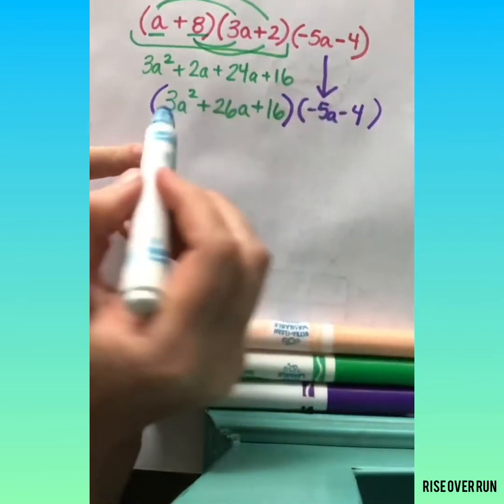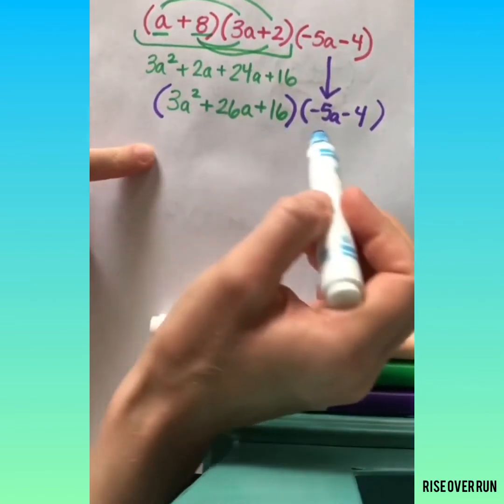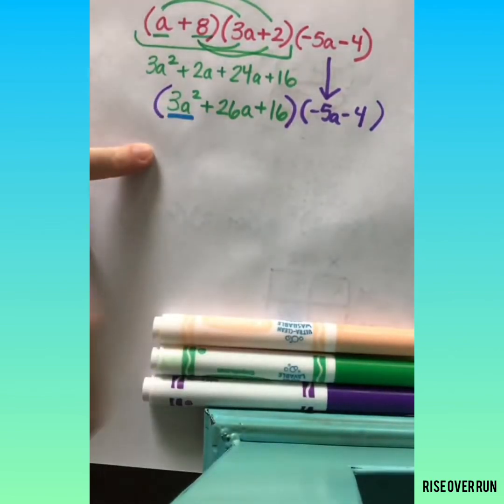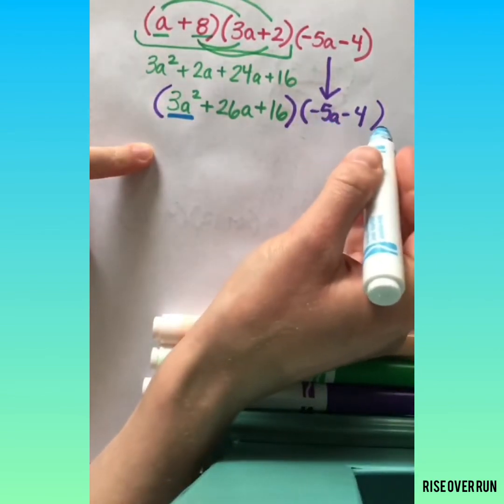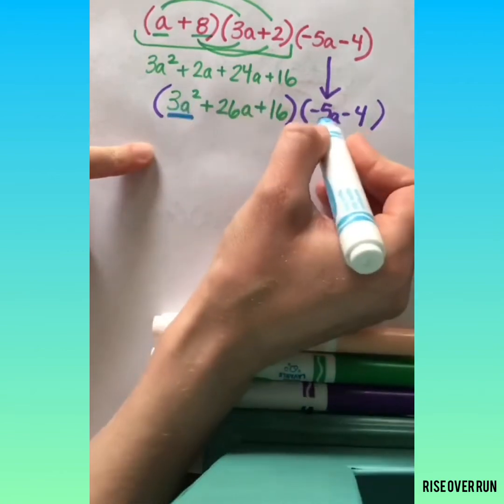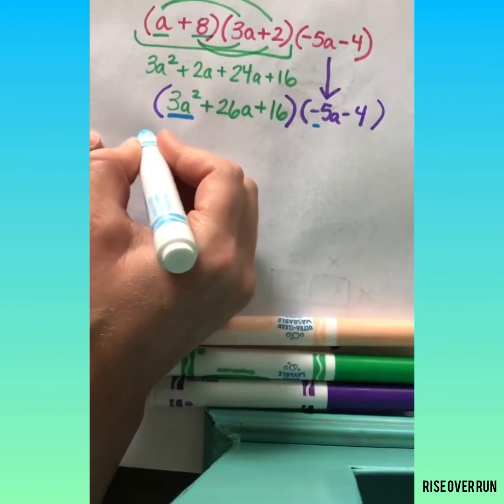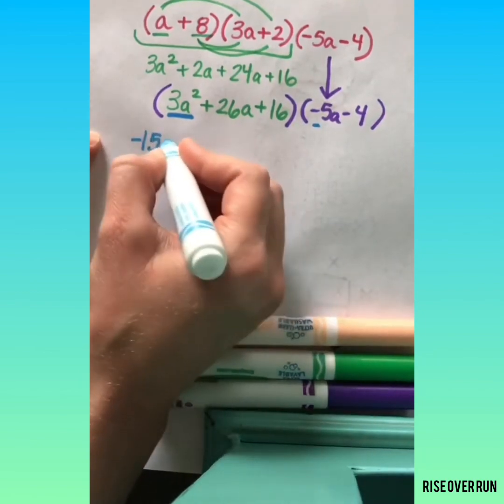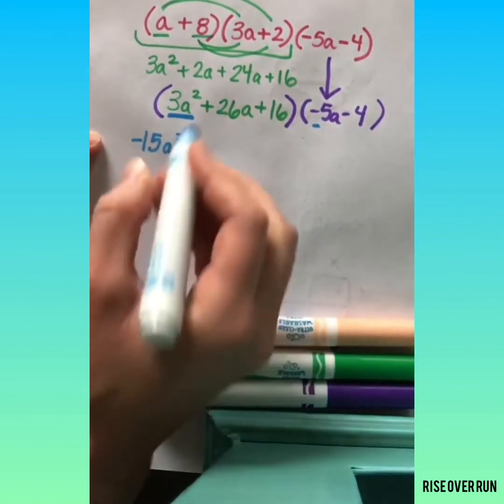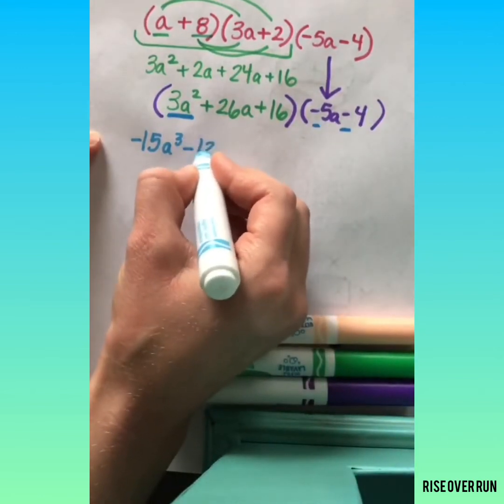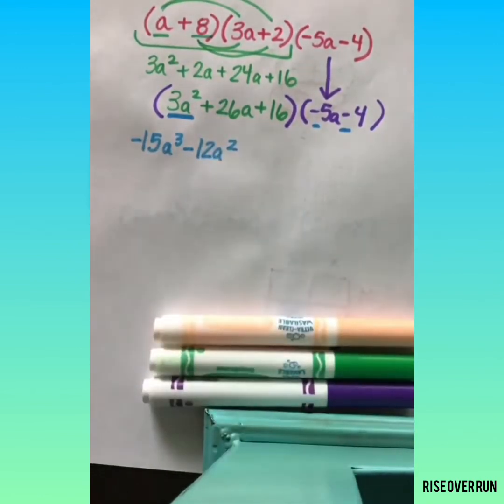Okay, I brought the third one down and now I'm going to multiply these two polynomials. I'll start with the first term here and multiply both terms in the second polynomial. 3A squared times negative 5A. That gives me a negative 15A cubed. 3A squared times negative 4 is negative 12A squared.